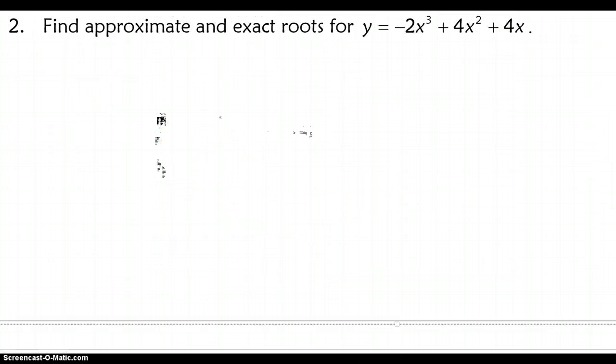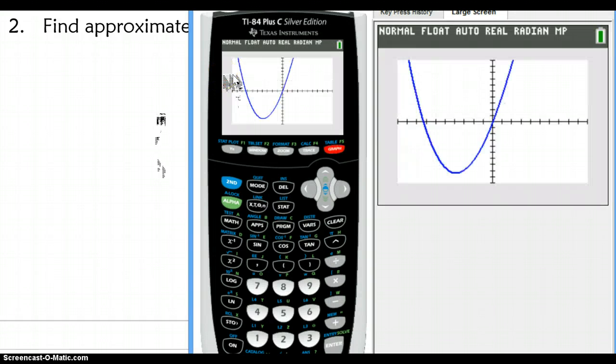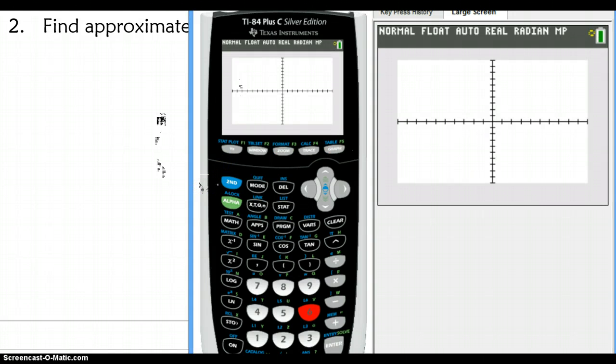Okay, so problem number two is asking us also to find the exact and the approximate roots for this new function. So go ahead in your calculator, enter in that new function, and then graph. Now, our graph is going to be pretty limited because we have a pretty small view screen right now. Our graph actually looks like it's a parabola, and that should kind of set off an alarm in your head that your view screen is too small because our function was a cubic function, so it really shouldn't look like a parabola. So I'm going to go back and hit zoom standard, so it's going to take a second for mine to come up. So as it graphs, now I can get a much better idea of what this function looks like, and I can see that I have three distinct roots.